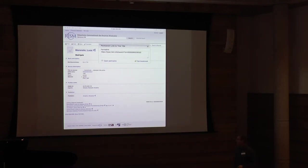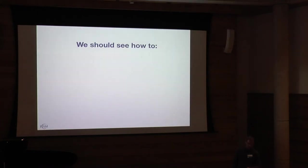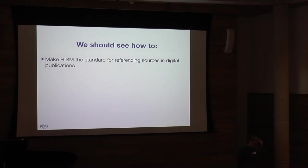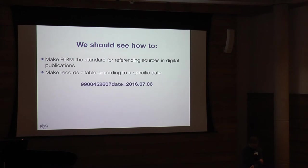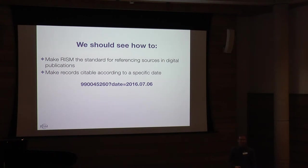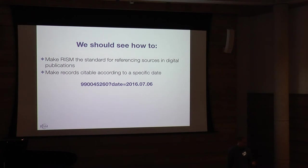We should really work on making RISM a standard referencing tool for sources in digital publications. It's somewhat lost — people use it as a research tool and then it's gone, but there's much more we could do. With versioning, we should be able to refer to records or source descriptions at certain points in time. If you make a publication on an anonymous source and five days later it's attributed to somebody, you probably still want your publication to refer to the anonymous version, or at least the user should know that the source description has changed. We can do that — it's just finding the right way. There's a lot for the RISM project to learn from other initiatives in this domain.